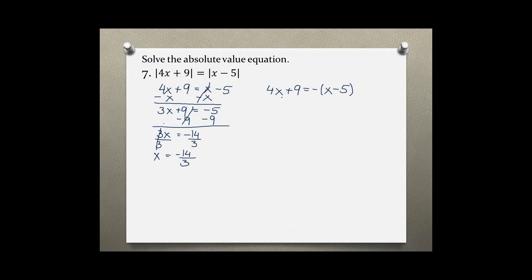Now let's try to solve this second part. Let's distribute the negative sign to eliminate the parentheses: 4x plus 9 equals negative x plus 5. Adding x to both sides of the equation gives us 5x plus 9 equals 5.